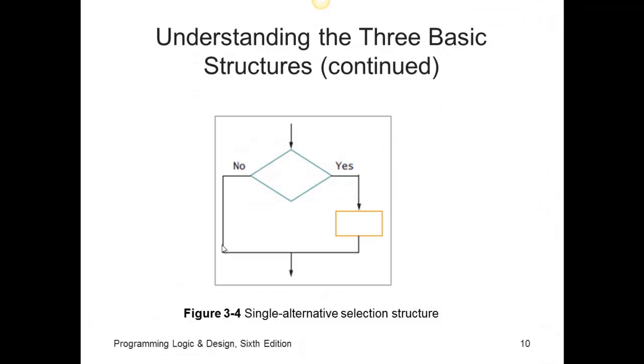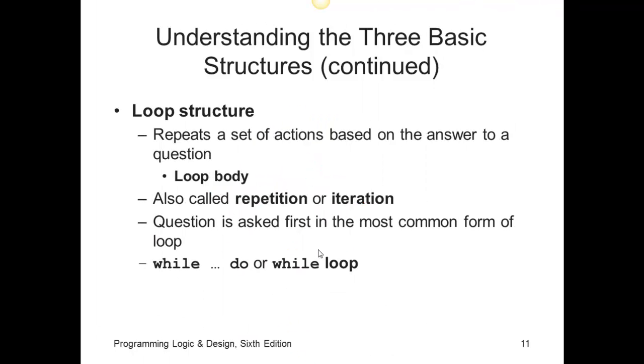Here's the flowchart diagram of a single alternative if. Again, the question is asked in a diamond. If the question or expression evaluates to true, we follow this route. If the expression is not true, we follow this route. Again, notice one single entry, one single exit point.